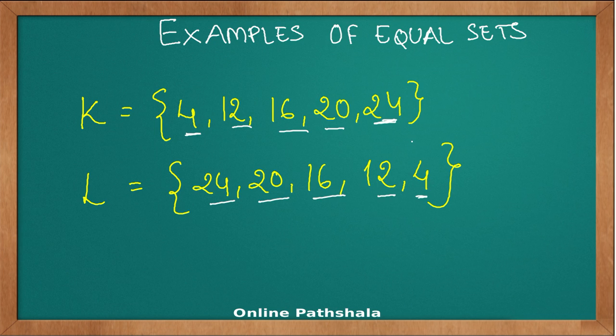It doesn't depend on the order of elements, it is the elements itself. So K and L are equal sets.